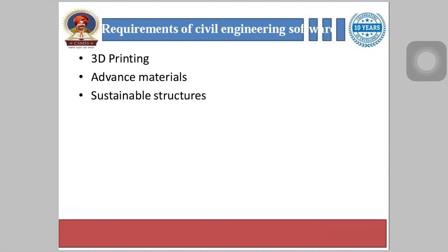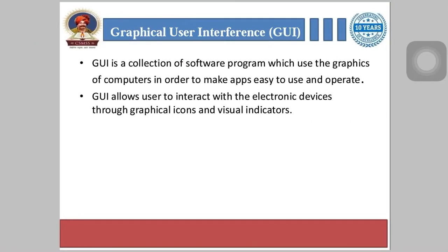The last requirement is sustainable structure — sustainable design has become an incredibly relevant trend within the construction and engineering fields. This means there will be an increase in elements for smart materials, intelligent electric grids, smart buildings, and more. Hence civil engineering design software solutions will likely adapt to accommodate these trends.